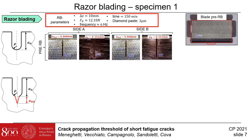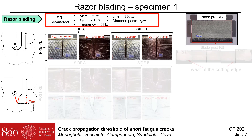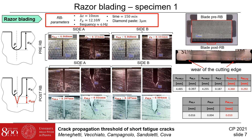The notch geometry after razor blading results quite different at site A and B. At site A, the depth was about 0.4 mm, while at site B about 0.19 mm. The tip radius was reduced to 0.060 and 0.004 mm respectively. Finally, the blade was heavily worn.